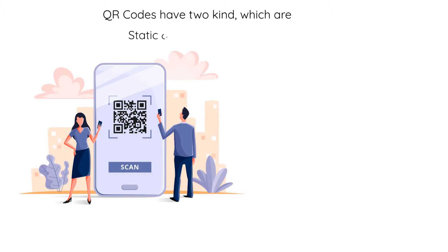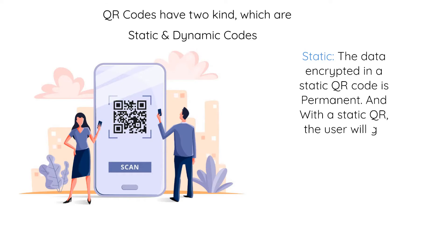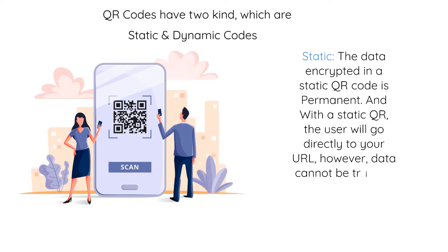Static: the data encrypted in a static QR code is permanent, and with a static QR, the user will go directly to your URL. However, data cannot be tracked, and you are unable to edit your URL.